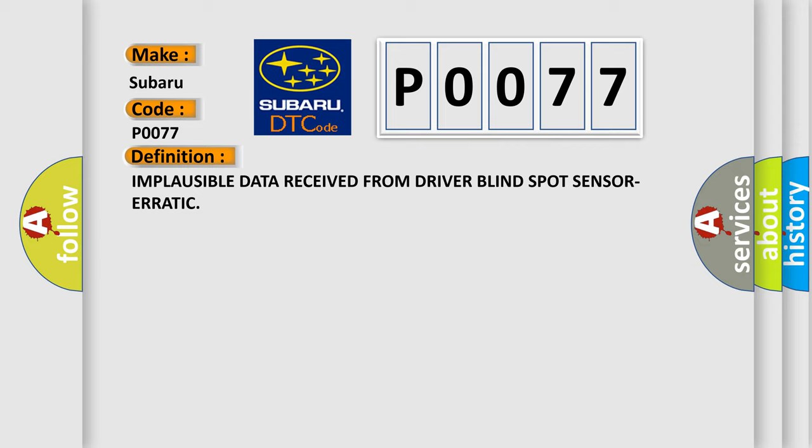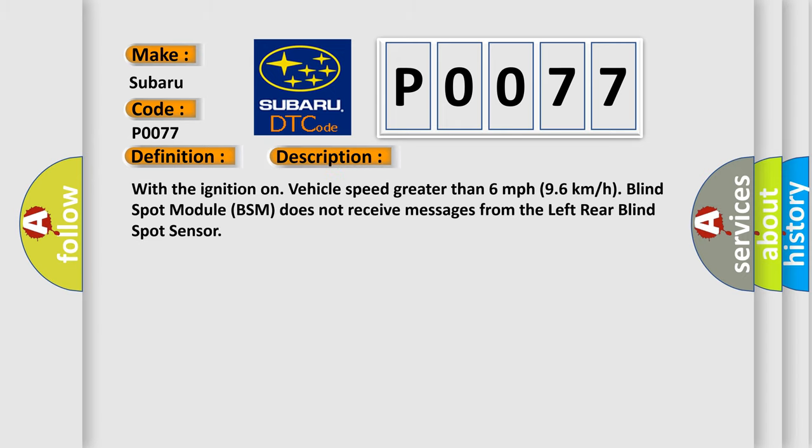And now this is a short description of this DTC code. With the ignition on, vehicle speed greater than 6 miles per hour or 96 kilometers per hour, blind spot module BSM does not receive messages from the left rear blind spot sensor.